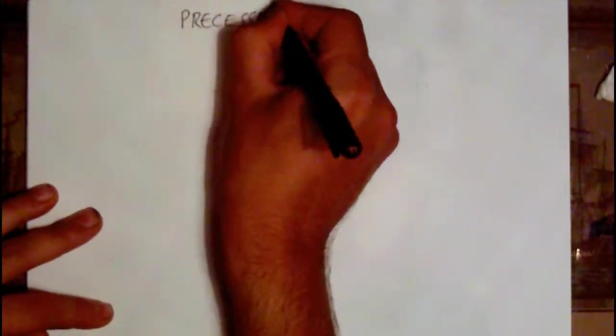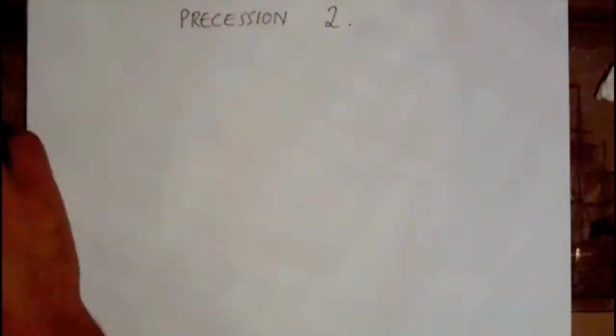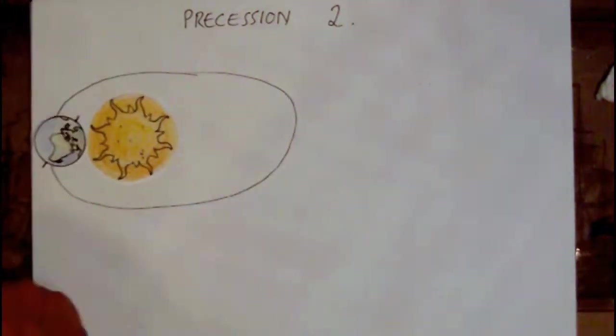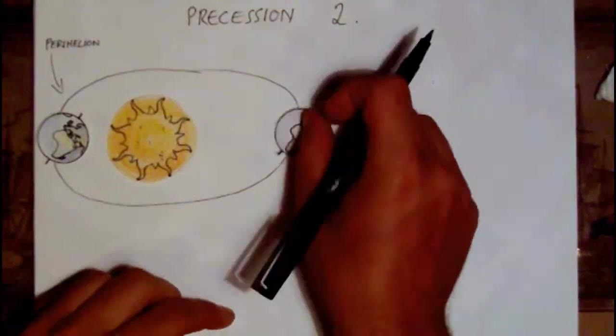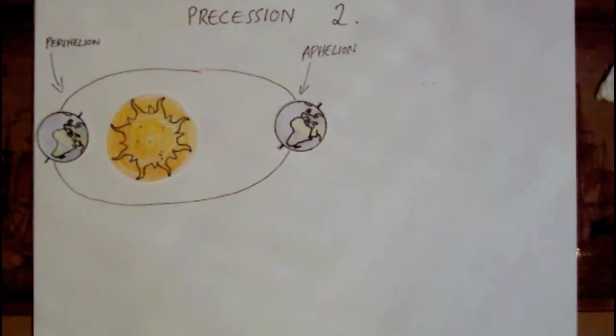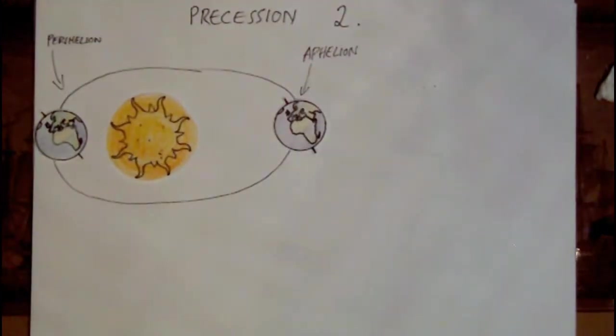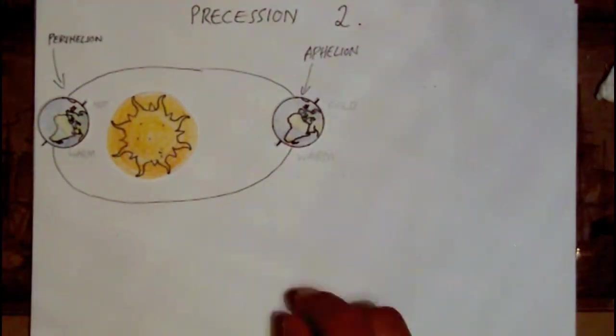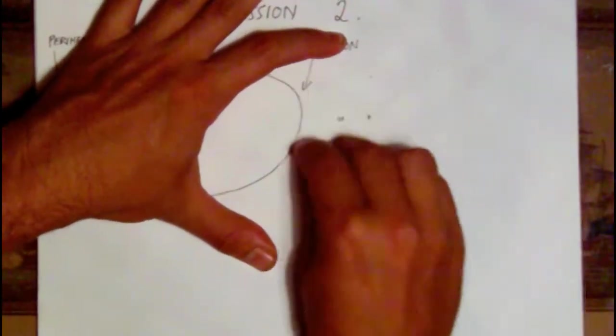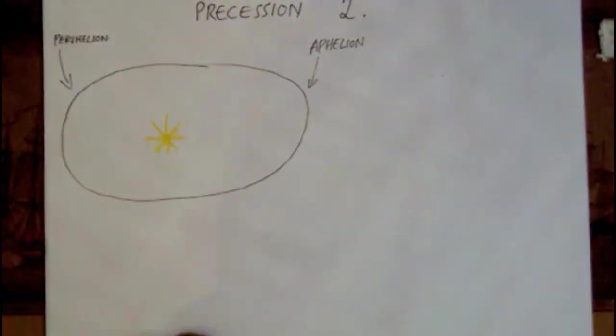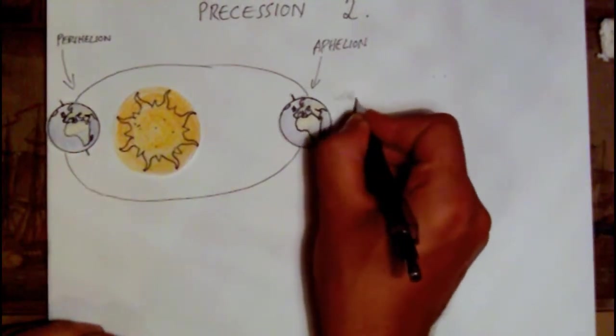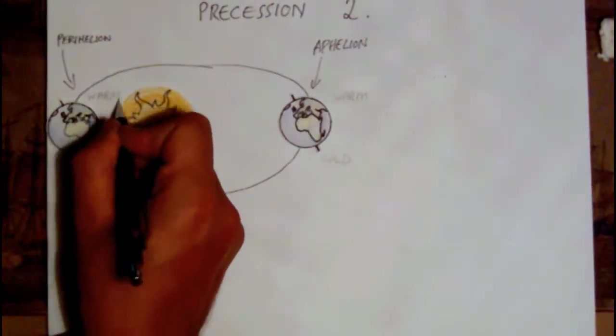The result on the Earth's climate is that when the North Pole is pointed towards the Sun at perihelion, that means the closest point to the Sun in the Earth's orbit, the Northern Hemisphere experiences more pronounced seasons and the Southern Hemisphere less pronounced. 13,000 years later, the situation is reversed, and the North Pole points away from the Sun at perihelion, giving milder seasons to the Northern Hemisphere and much more extreme seasons to the Southern Hemisphere.